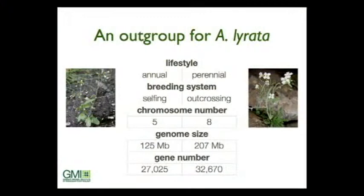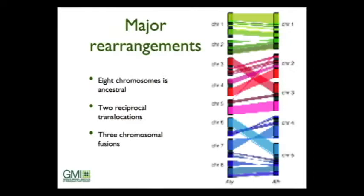The gene number also differs between these two. So the genomes are sequenced — 125 and 207 megabases are now reasonably good estimates — however the gene numbers show that many genes have been lost, but not that many. From genetic mapping it's been long known that there have been major rearrangements: eight chromosomes is the ancestral number, and there's been a minimum of two reciprocal translocations and three chromosomal fusions to go down to five. Comparing the two genomes you can actually find remnants of the missing centromeres.